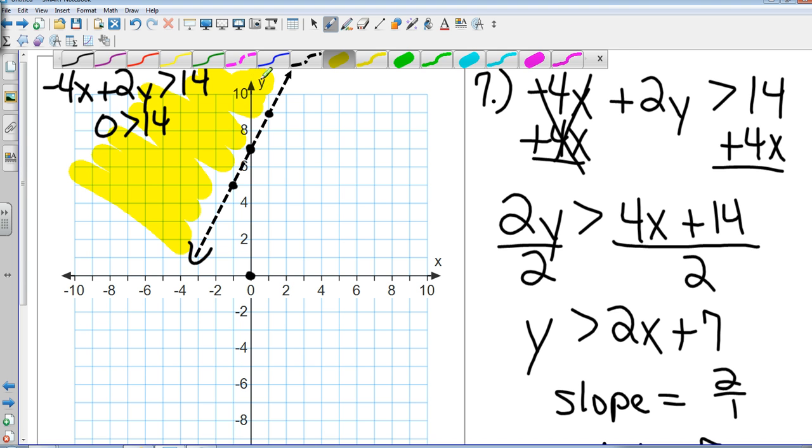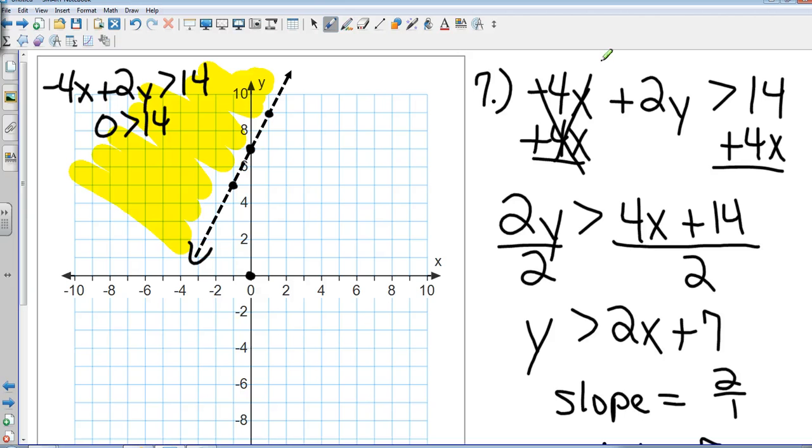And I'm going to take negative 4x plus 2y is greater than 14. And everywhere I see an x, I'm going to replace it with a 0. And everywhere I see a y, I'm going to replace it with a 0. So what's 0 plus 0? 0. Is 0 greater than 14? No. So I do not want to include him. So I shade away from him. If it's true, shade to cover your 0, 0. If it's false, shade away from your 0, 0.